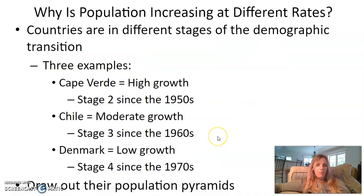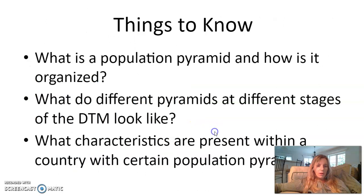To sum it up: three examples — Cape Verde, high growth, stage two; Chile, moderate growth, stage three; Denmark, low growth, stage four. Thanks guys.